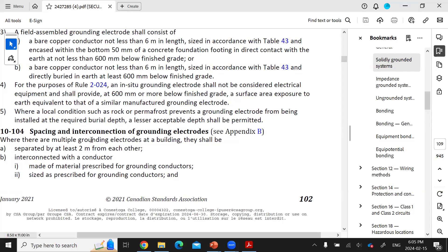It says that where multiple grounding electrodes are used, they should be separated by at least two meters from each other. And they should, of course, be bonded together with a conductor.